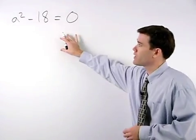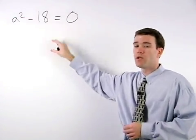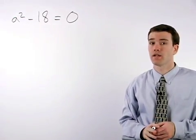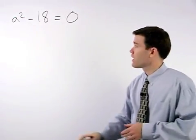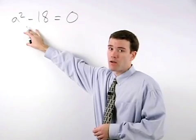The equation a squared minus eighteen equals zero is called a quadratic equation because we have a squared term as our highest power.